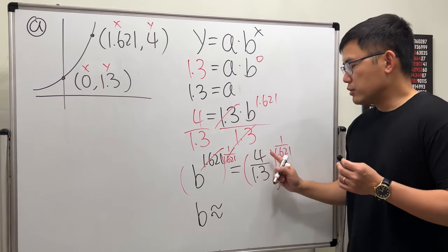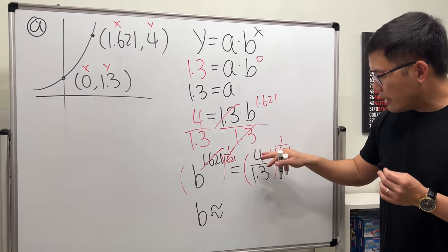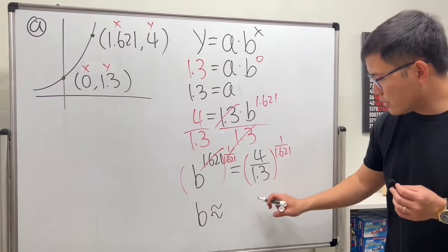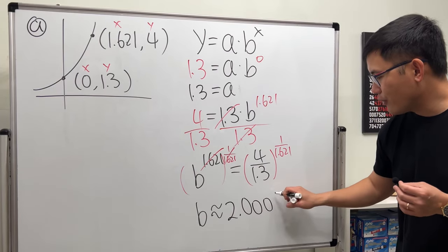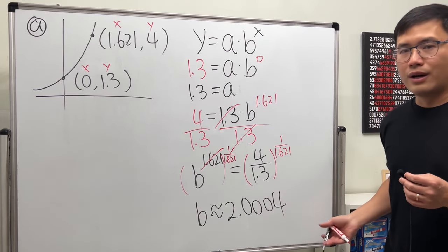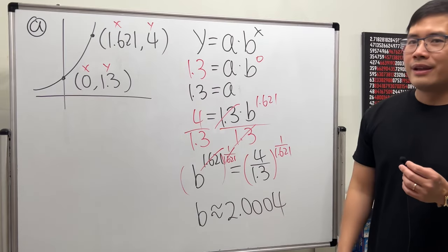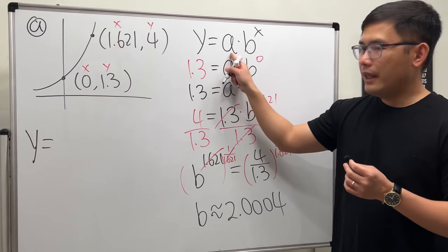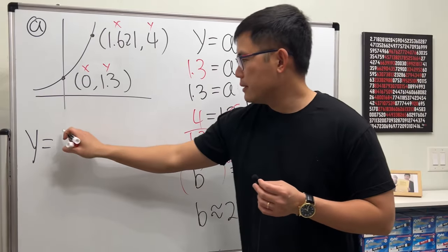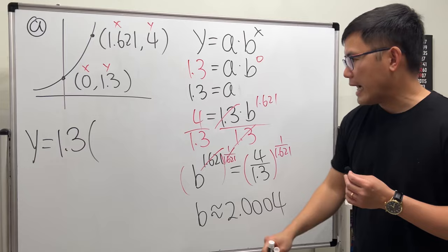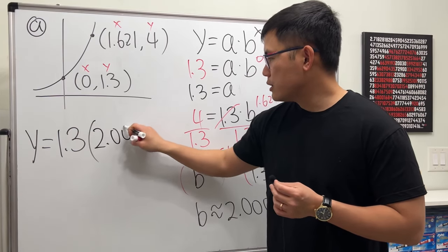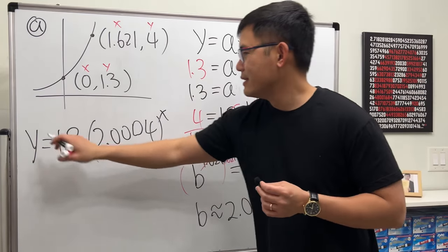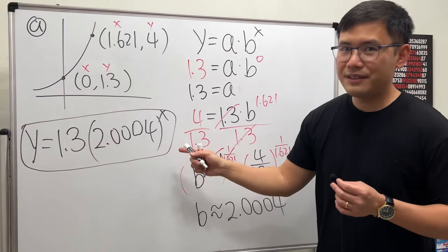So we get b by itself, and now just make sure I use the calculator, enter everything correctly and carefully, and you should get 2.000417. The answer for this exponential function is y equals a, we know it's 1.3, times b, which is 2.0004, raised to the x power. That's it for the first one.